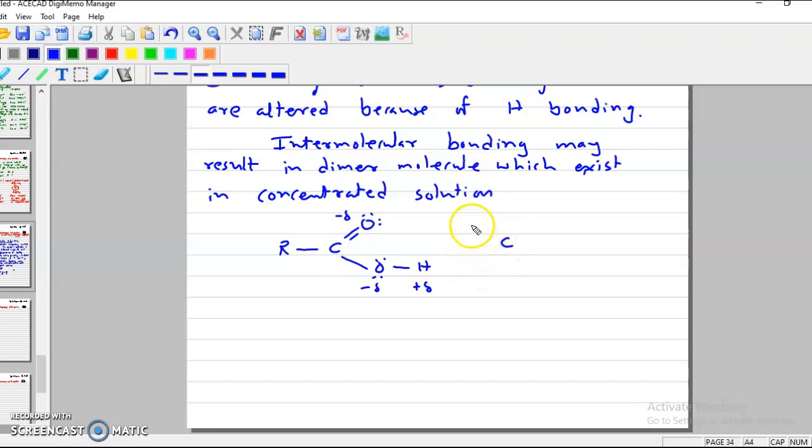In the same medium when two molecules come closer, then this positive hydrogen of one will attract negative oxygen and form hydrogen bond. And these two hydrogen bonds are very strong and therefore they behave like single molecule and we call them dimer. But this will be in concentrated solution.